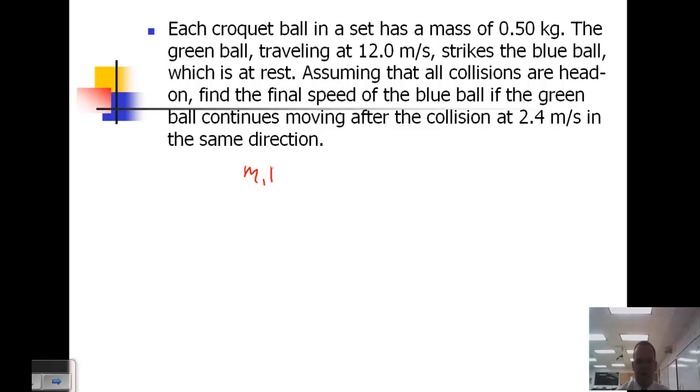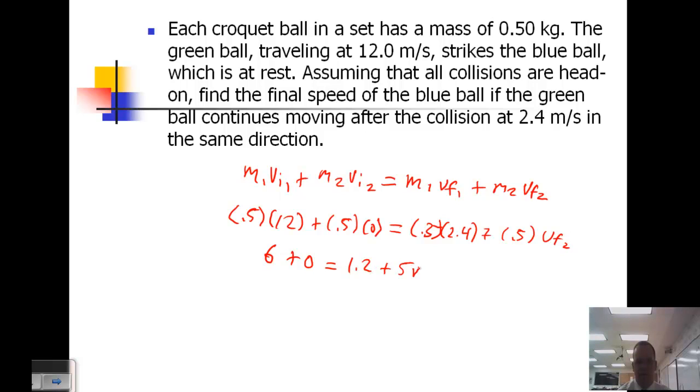So here we have an elastic collision. m₁V_initial1 plus m₂V_initial2 equals m₁V_final1 plus m₂V_final2. So 0.5 times 12 plus 0.5 times 0 equals 0.5 times 2.4 plus 0.5 times V_final2. So we get 6 plus 0 equals 1.2 plus 0.5 V_final2. Subtract 1.2 from both sides, and we get 4.8 equals 0.5 V_final2. Divide both sides by 0.5, and we get 9.6 equals V_final2.